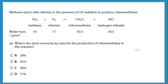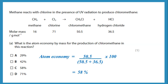Methane reacts with chlorine to give a product. What is the atom economy for production of chloromethane? Chloromethane is the desired product. The atom economy is the MR of chloromethane over the total — that's the MR of chloromethane plus the MR of HCl — times 100. That gives the percent atom economy.